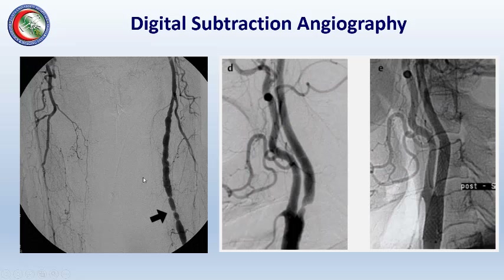One advantage of digital subtraction angiography is that we remove the unwanted bone image which may obscure small or fine pathology. This is an example of carotid angiography showing the common carotid, internal carotid, and external carotid arteries. After digital subtraction, the bones of the cervical spine and skull are removed, giving a clear picture with a visible area of narrowing in the proximal internal carotid artery.